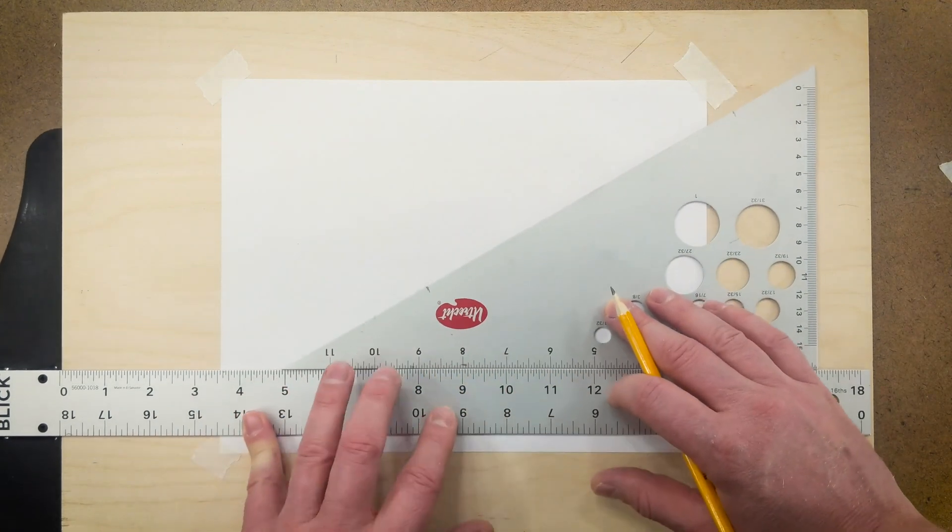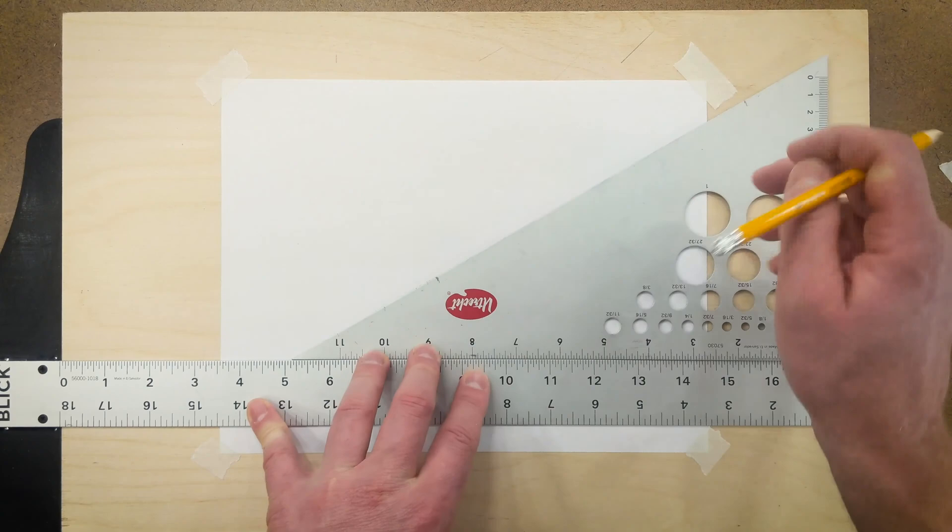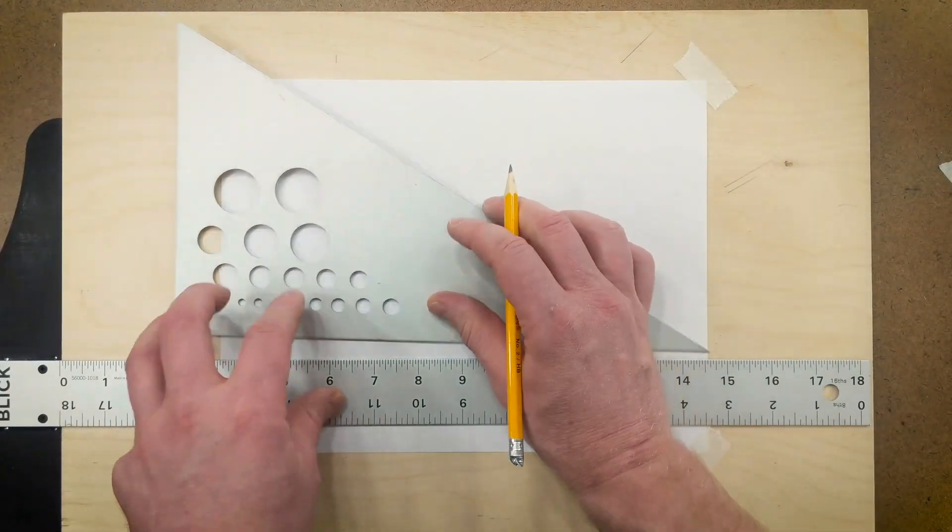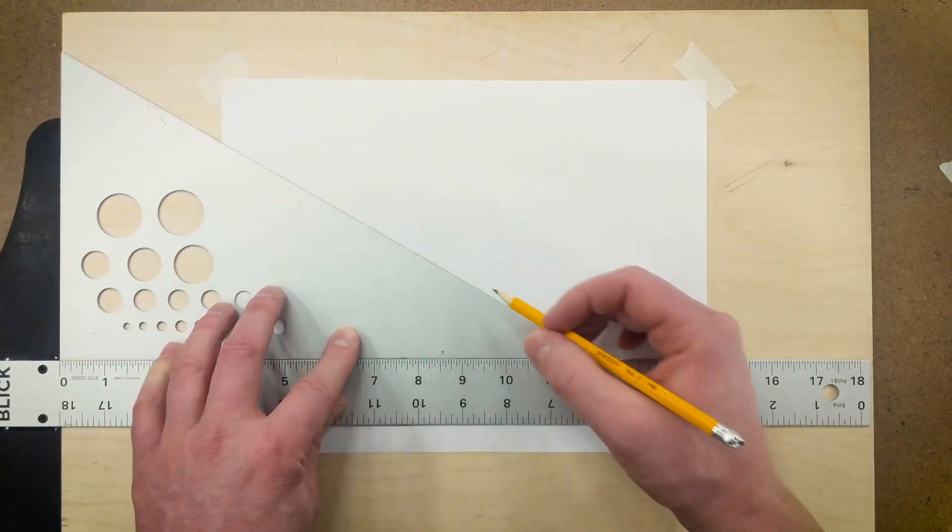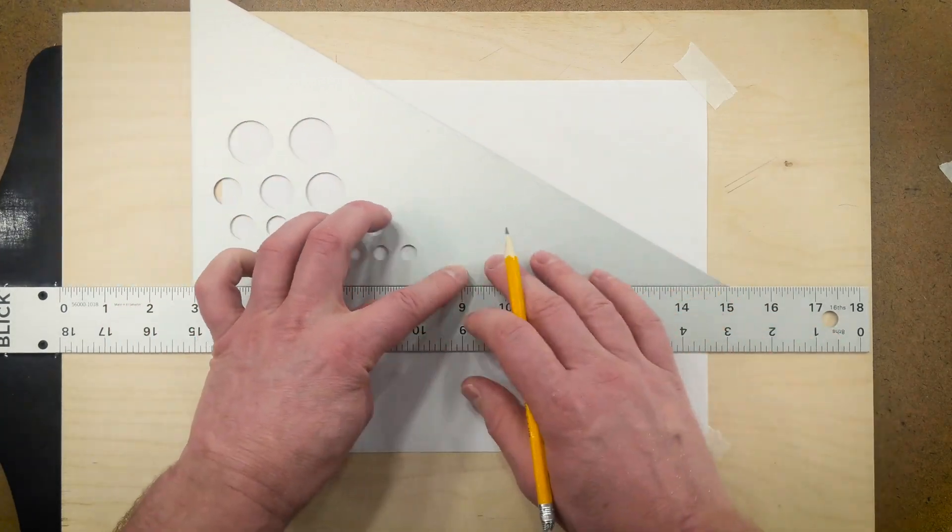In addition, we can also use the triangle to draw 30-degree lines in either direction by flipping it over. We can move this to the position we want and slide it on the t-square.